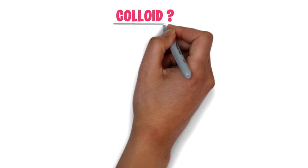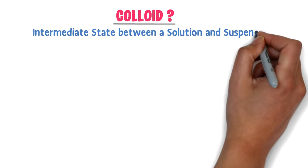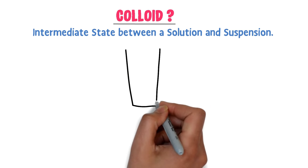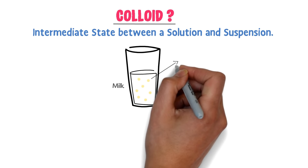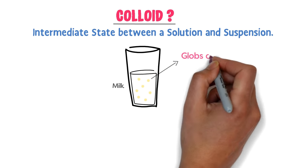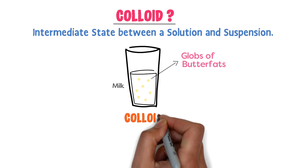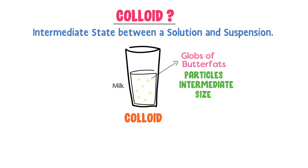A colloid is an intermediate state between a solution and a suspension. For example, consider milk. Milk contains globules of butterfat suspended throughout the liquid, so milk is a colloid. The particles of milk are intermediate in size between those of a solution and a suspension.